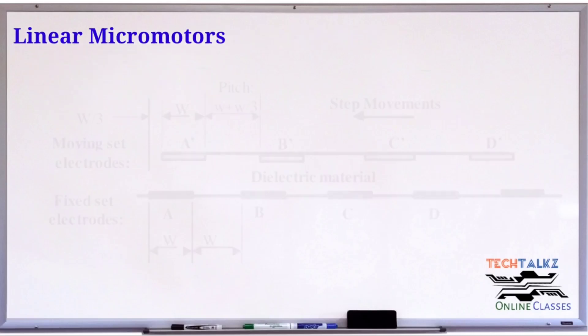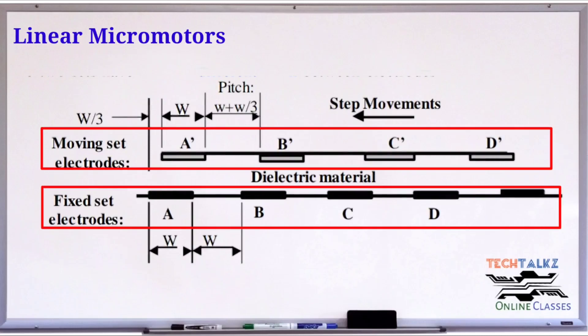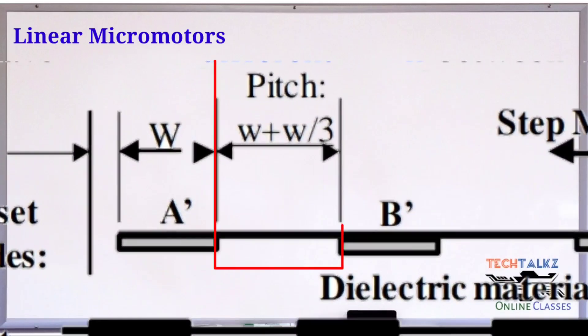First, linear motors. For linear motors, there will be a number of electrodes made up of conducting materials. All these electrodes have a length capital W. Bottom plates have a pitch of W, which is the distance between nearby electrodes. Top electrodes also have a pitch, but with a slight difference: W plus W by 3.